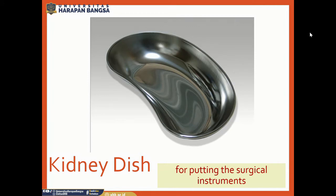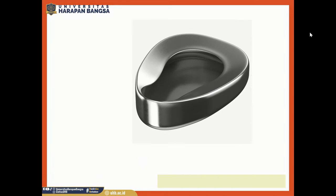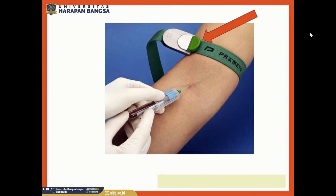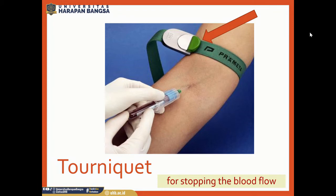This is a kidney dish. Kidney dish is for putting the surgical instruments. This is a bedpan. Bedpan is for toileting bedridden patients. This is a tourniquet. Tourniquet is for stopping the blood flow.